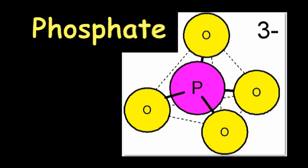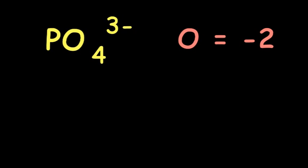We will look at the phosphate radical found in cheap soft drinks. Oxygen has a valence of minus two. We want to find the phosphorus oxidation state.